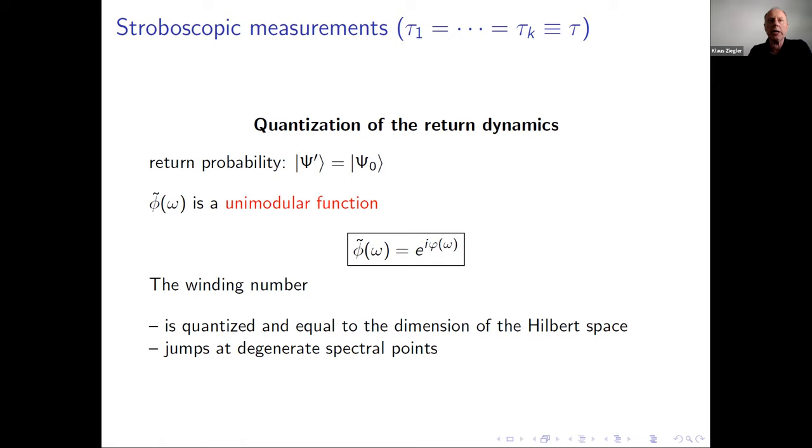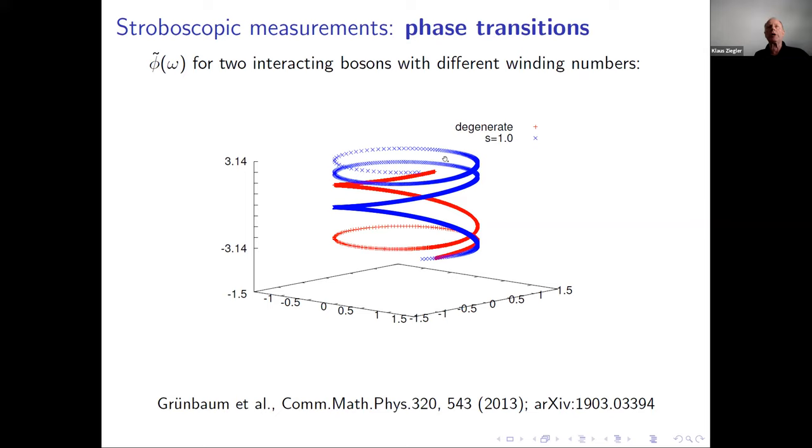This is an example for a system of two interacting bosons. We see there are degeneracies. Either the winding number of this multi-valued function is four, and the other one is two. This means we have discovered an effect which should be observable in experiment: the winding number jumps when we hit a phase transition point based on this monitored evolution.